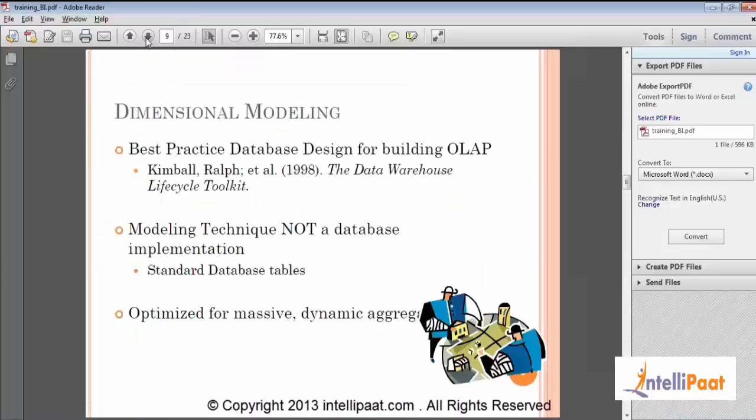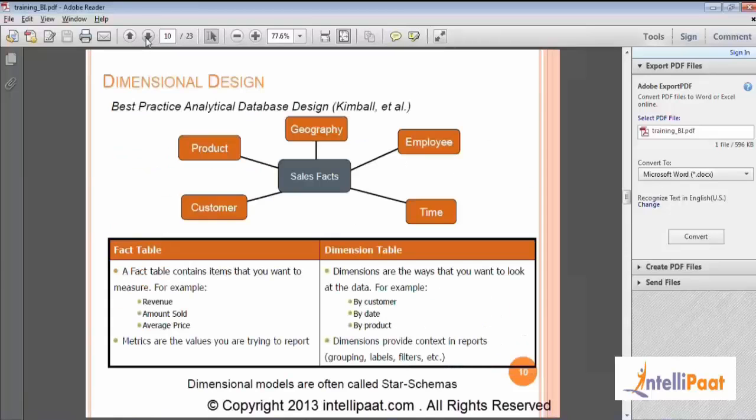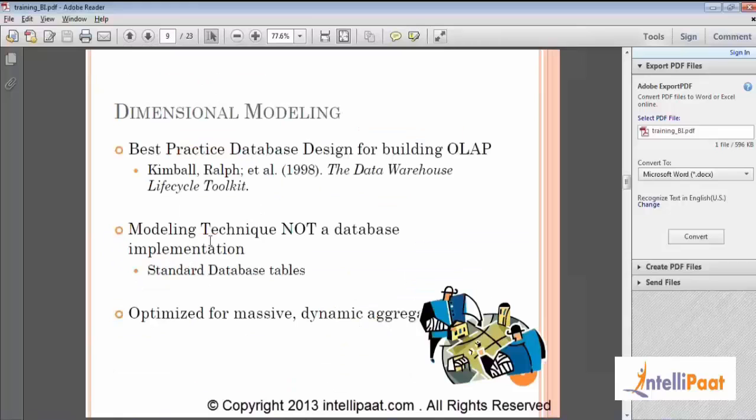Let's talk about dimensional modeling. So if you guys are interested in doing dimensional modeling, these are a couple of good books you can go and refer. Kimball is the father of data warehousing. If you guys are interested in learning more in detail, read this book. This is a very good book. Best practice database design for building OLAP. One of the very good books. Kimball is the data warehouse father.